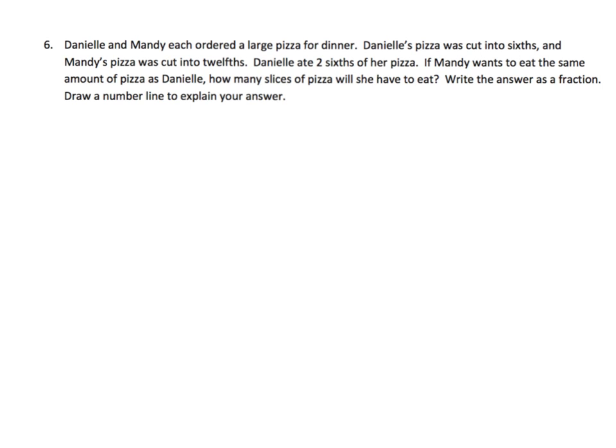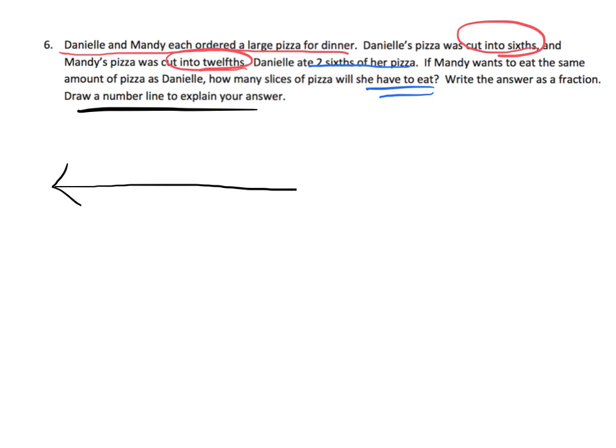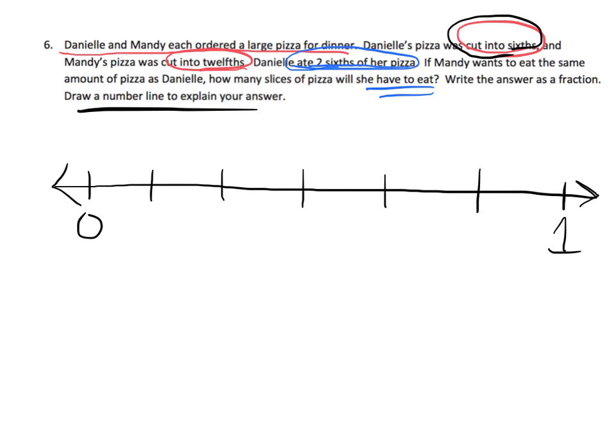And the last problem for this video, Danielle and Mandy, they each ordered a large pizza for dinner. Danielle's was cut into sixths. Mandy's was cut into twelfths. Danielle ate two-sixths of her pizza. If Mandy wants to eat the same amount, how many pieces will she have to eat? So we're going to use a number line. So we're going to start with a number line. And because we're told sixths, we're going to start with six, going from zero to one. And we're going to begin by cutting it into sixths. So I'm going to cut it in half. And then I'm going to cut each half into three pieces. So there's my sixths. And it says that Danielle ate two-sixths. So there's zero-sixths. Here's six-sixths. So here, right here, is two-sixths.